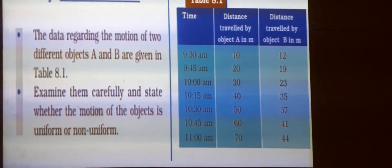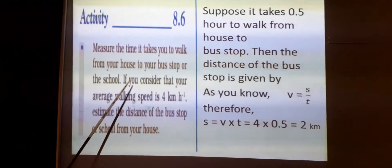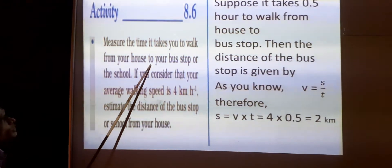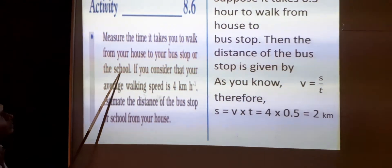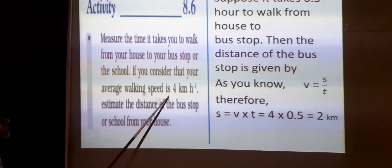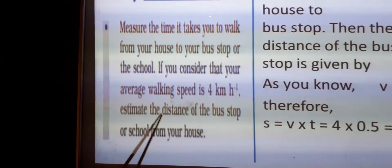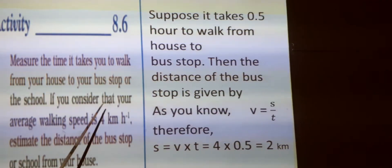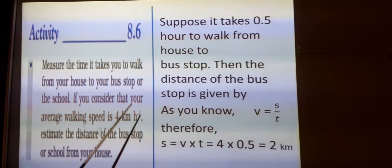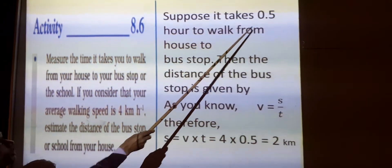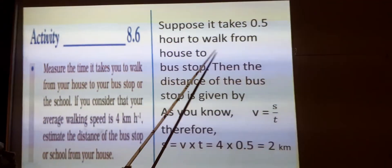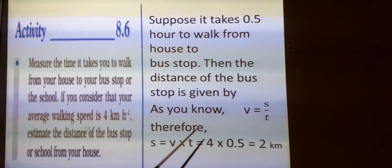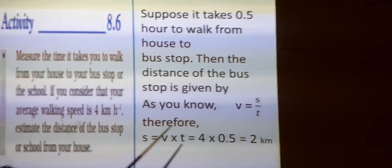Now let us switch over to the next activity, that is 8.6. In this activity, we have to measure the time it takes you to walk from your house to your bus stop or school. If you consider that your average walking speed is 4 km per hour, estimate the distance of the bus stop or school from your house. Let us suppose here that it takes 0.5 hour, that is half an hour, to walk from the school to the bus stop.